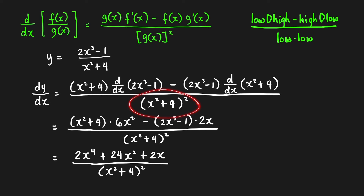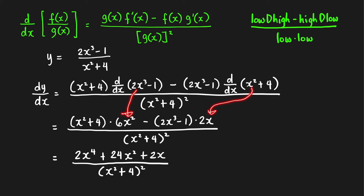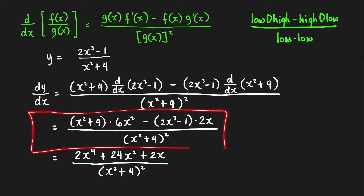We're not yet done because we still have derivative operators to compute. The derivative of (2x³ − 1) is 6x², since the derivative of 1 is 0. The derivative of (x² + 4) is 2x. If you're asked not to simplify your answer, you may leave it this way.